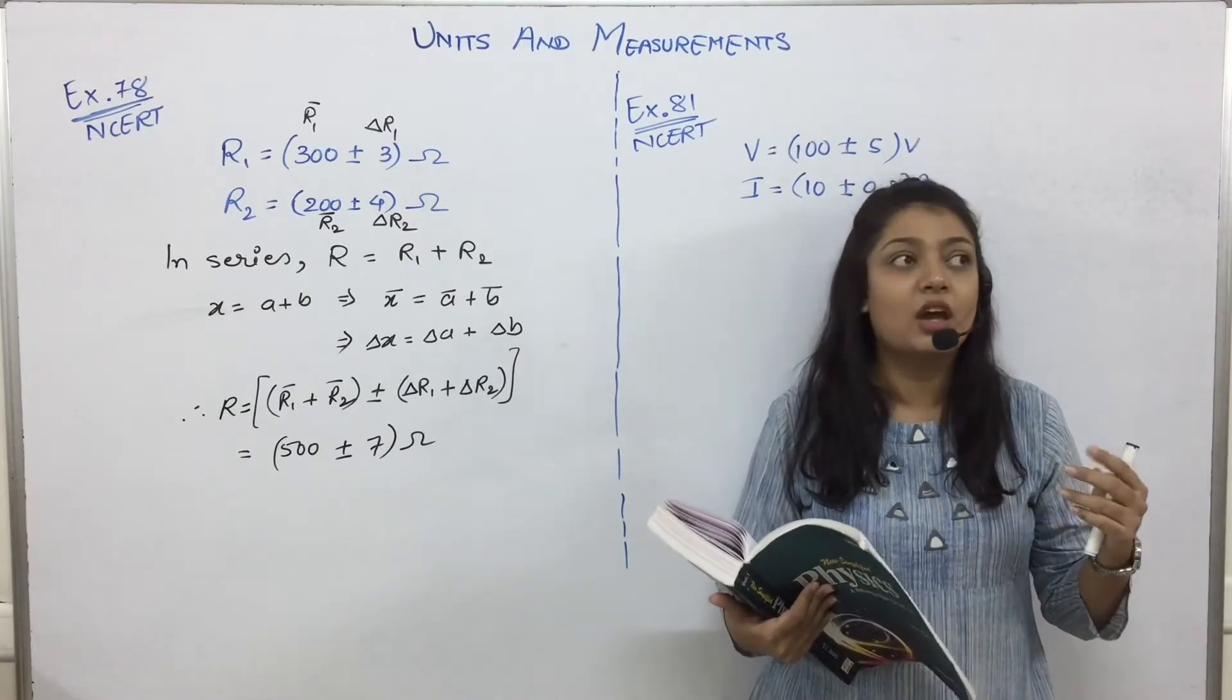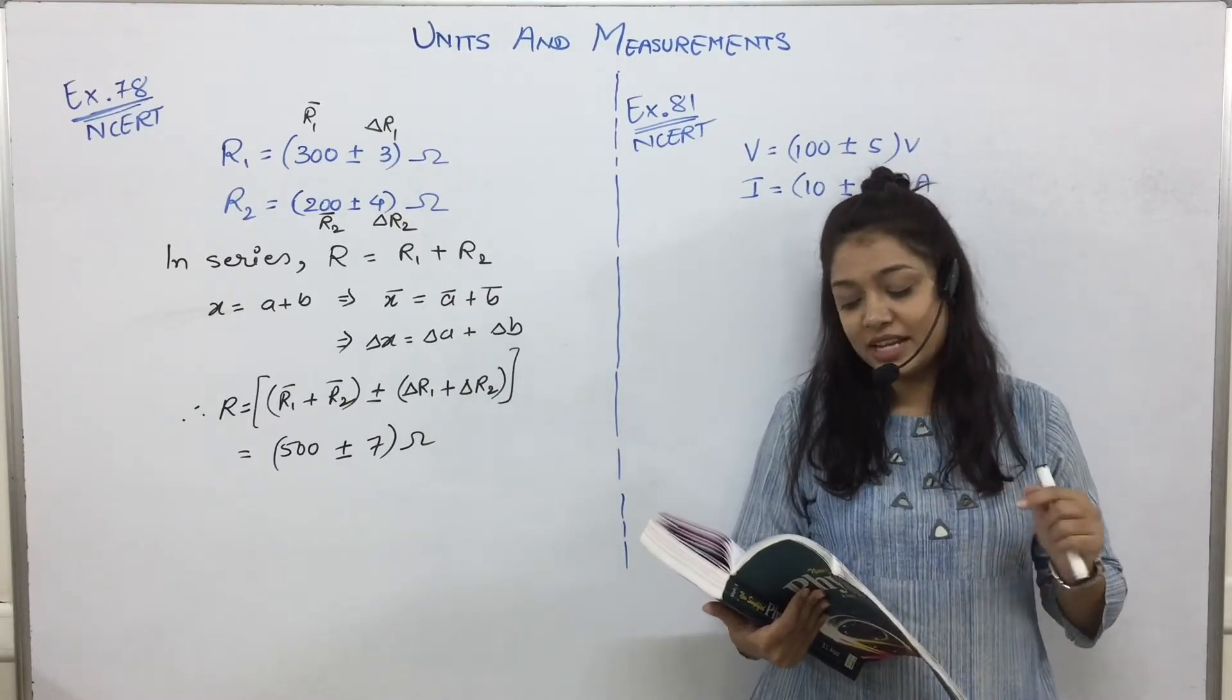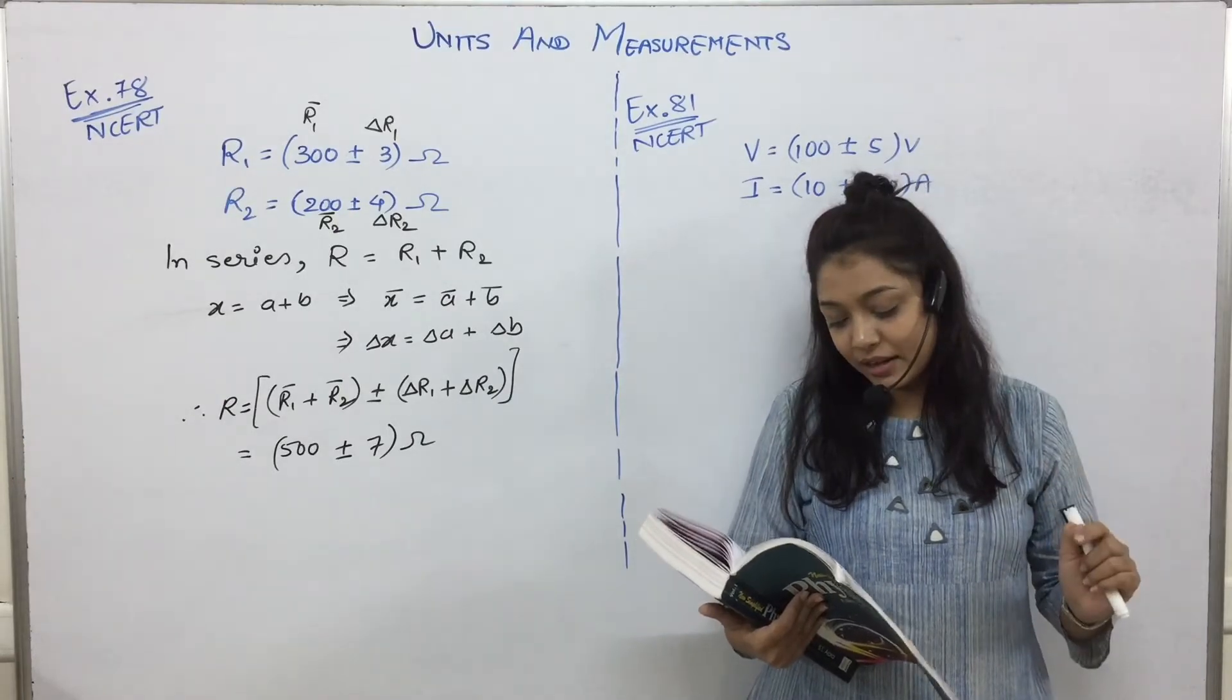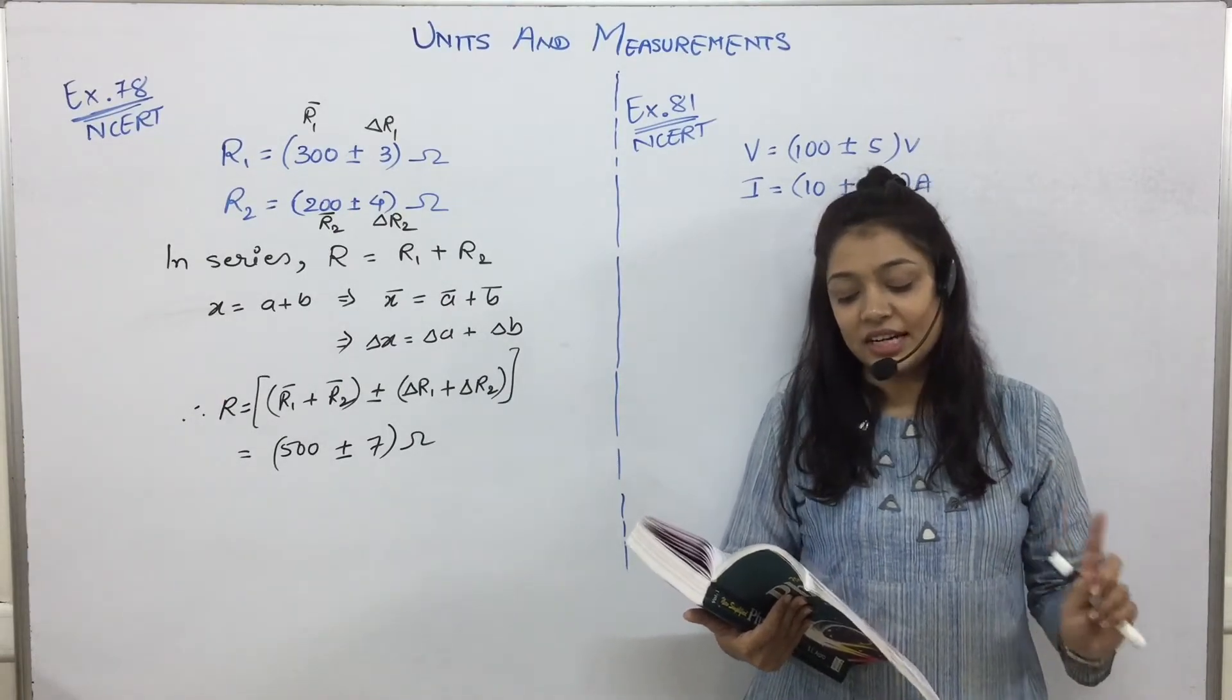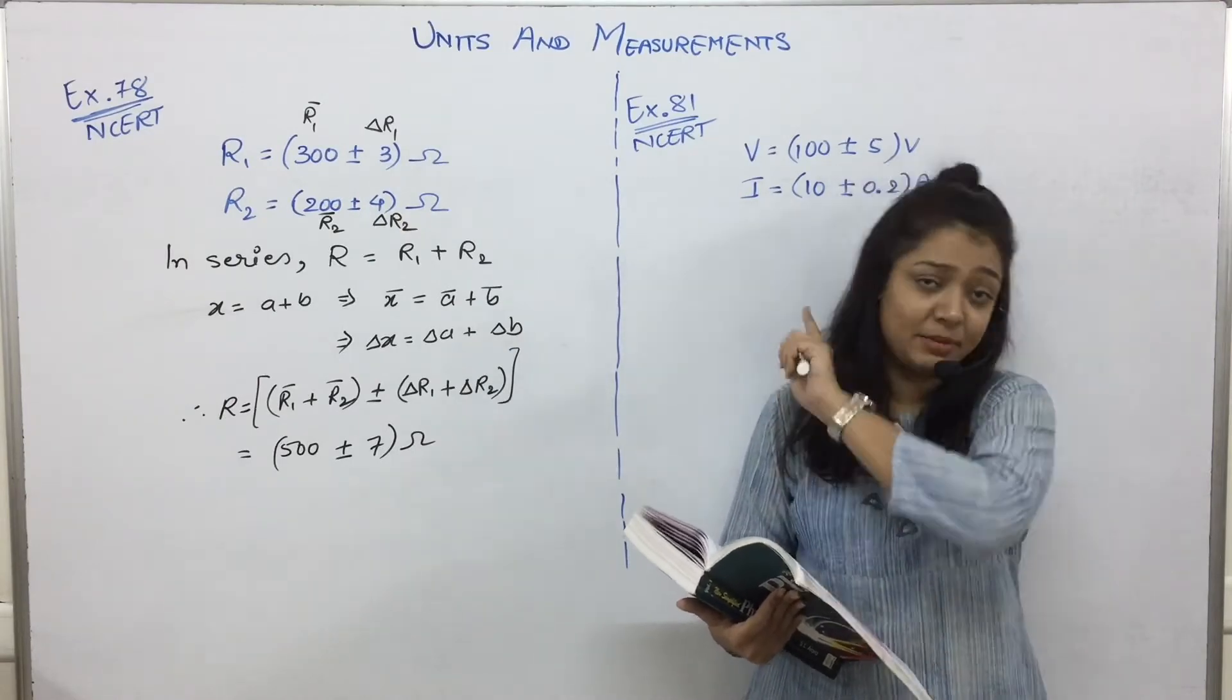This is something that you have already understood in 10th standard Ohm's law. Right, so here it is given resistance R equals V by I, where V is given and I is also given. Both the values I have written over here.